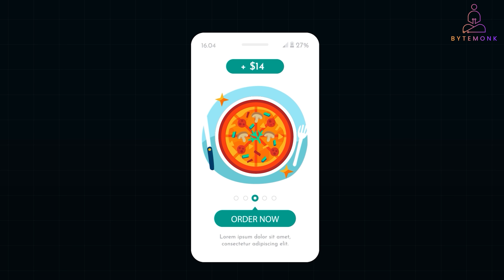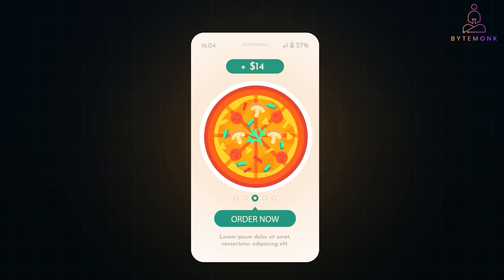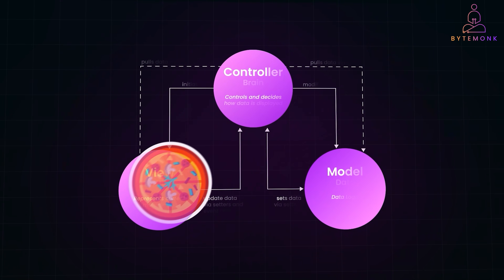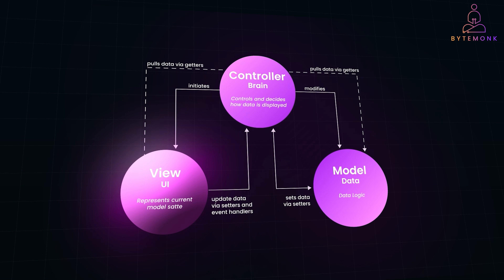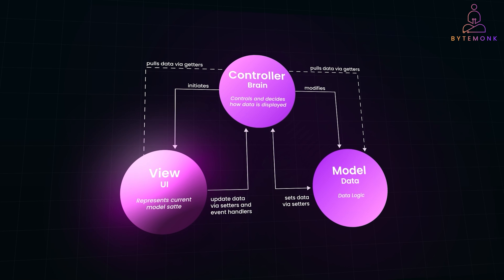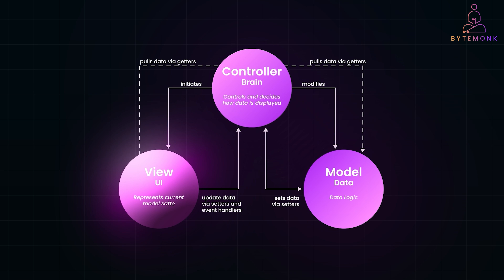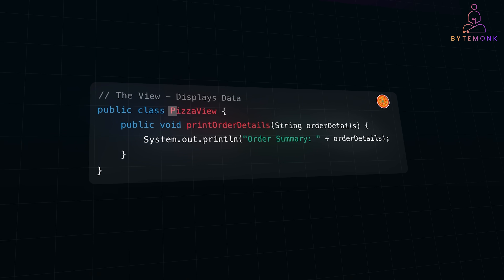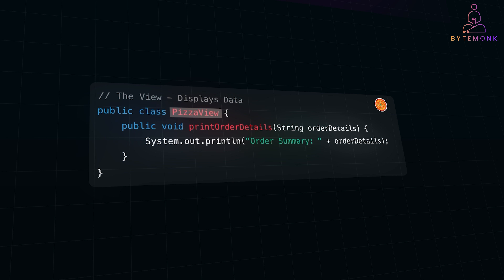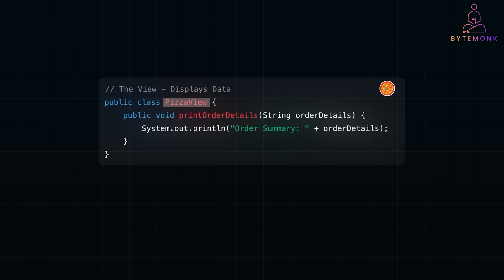Your app's view is like the pizza box — it shows you the delicious result but doesn't know how the pizza was made. The view handles everything visual; think of it as the face of your app, what your users see and interact with. The view is only concerned with presentation. It takes the data prepared by the model and formats it for the user. It doesn't care where the data comes from, how it was calculated, or what logic was involved. Its job is simple: to look good and keep the user happy. The pizza view class has a single responsibility — to take data like the details of an order and present it in a way that's easy to understand, just printing the data to the console with no calculations, no database queries, no logic.